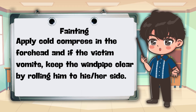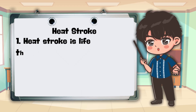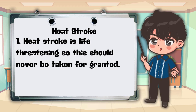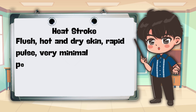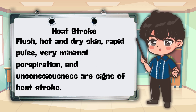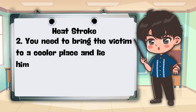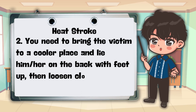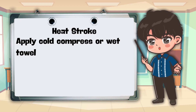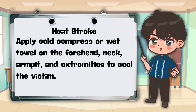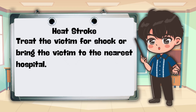For heat stroke: heat stroke is life-threatening and should never be taken for granted. Signs include flushed hot and dry skin, rapid pulse, very minimal perspiration, and unconsciousness. Bring the victim to a cooler place and lay them on their back with feet up; loosen clothing and remove footwear. Apply cold compress or wet towel on the forehead, neck, armpit, and extremities to cool the victim. Treat the victim for shock or bring them to the nearest hospital.